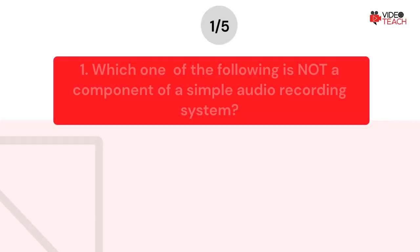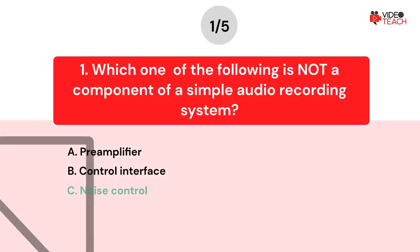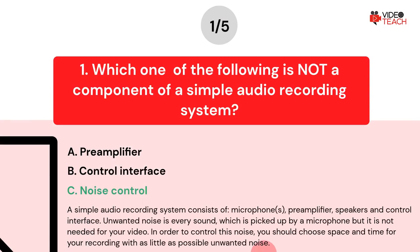The correct answer is C. A simple audio recording system consists of microphones, preamplifier, speakers, and control interface. Unwanted noise is every sound which is picked up by a microphone but is not needed for your video. In order to control this noise, you should choose a space and time for your recording with as little unwanted noise as possible.